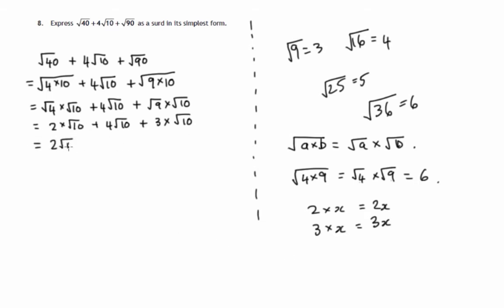2 lots of root 10 plus 4 lots of root 10 plus 3 lots of root 10. How many root 10's do we have? 2 of them plus 4 of them plus 3 of them. That's 9 lots of root 10.